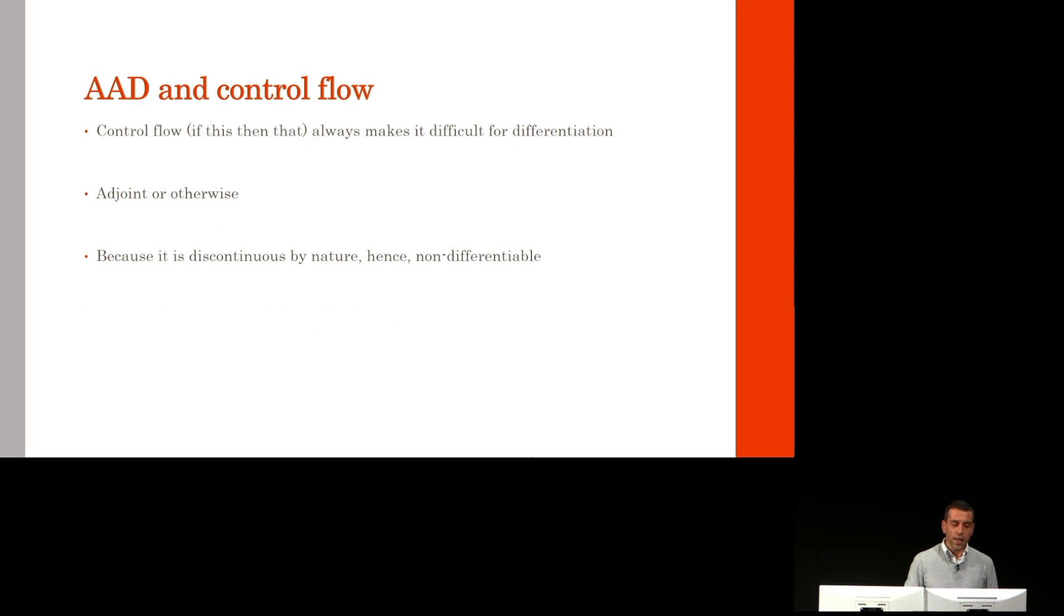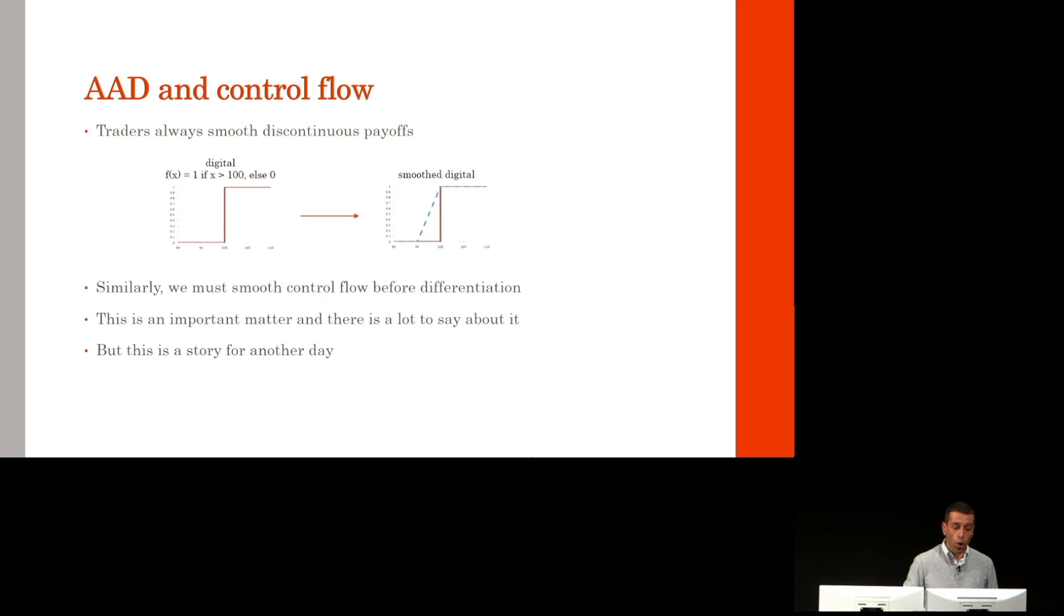Control flow always complicates differentiation, adjoint or otherwise, because by nature it is discontinuous. That's why traders always smooth discontinuous payoffs, and as developers, we must also smooth our discontinuous control flow. This is an important matter, and there is a lot to say about it. But this is a story for another day.